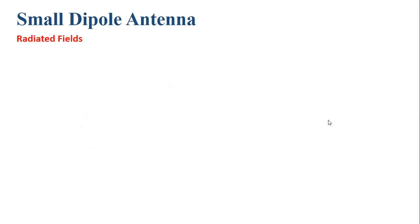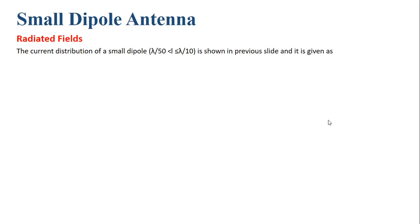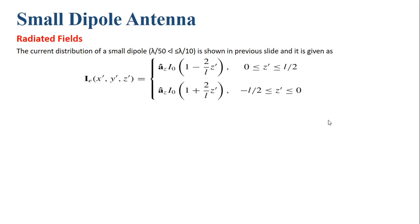For the small dipole antenna with triangular current distribution, the current can be written as: J(x', y', z') = a_z̄ · i₀ · (1 − 2z'/l) for z' from 0 to l/2 (above the origin), and a_z̄ · i₀ · (1 + 2z'/l) for z' ranging from 0 to −l/2 (below the origin).